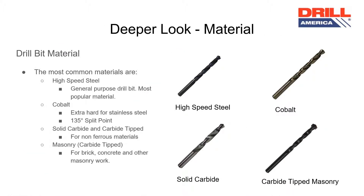The drill bit material determines what application the drill bit will work for. High speed steel drill bits are the most common drill bits and are for general purpose use. Cobalt drill bits are extra hard and are for use in extra hard materials such as stainless steel. Solid carbide and carbide tip drills are for non-ferrous materials. Masonry drill bits, which are also carbide tipped, are for use only in brick, concrete, and other masonry applications.